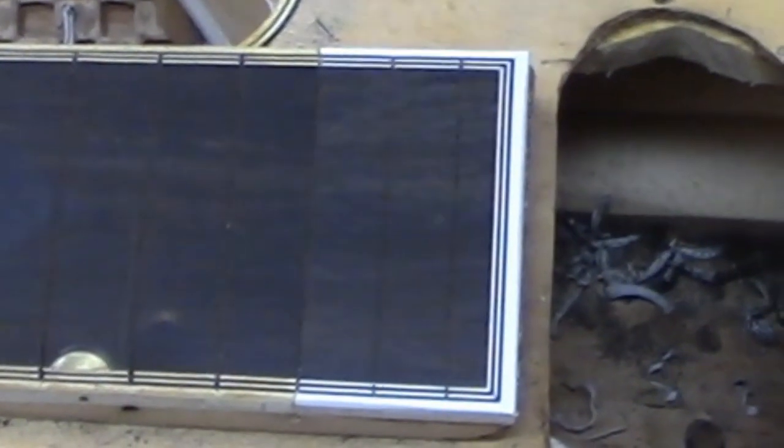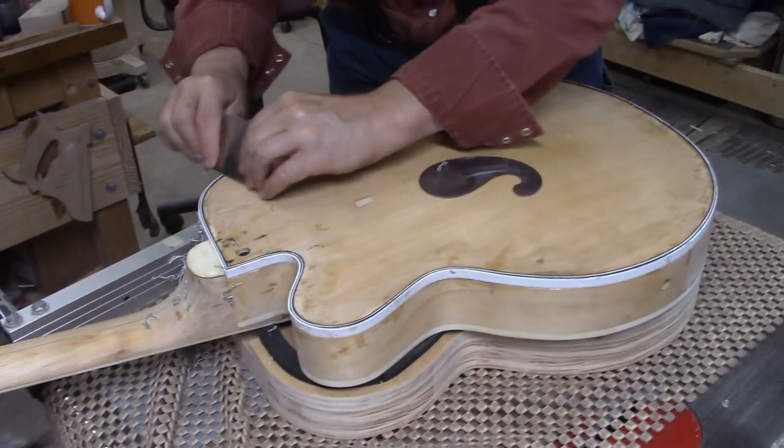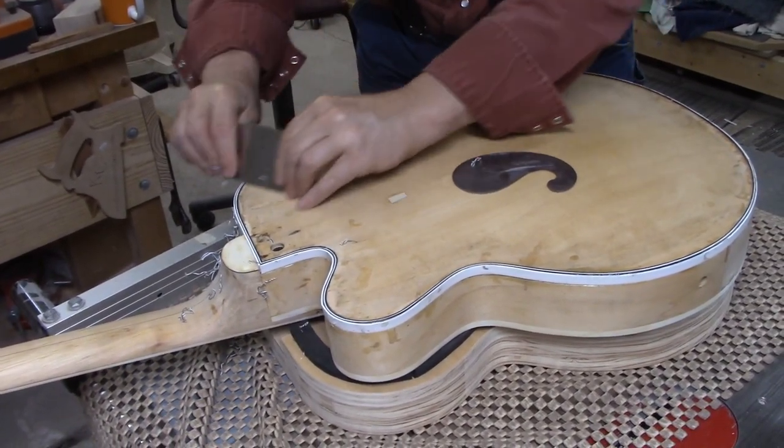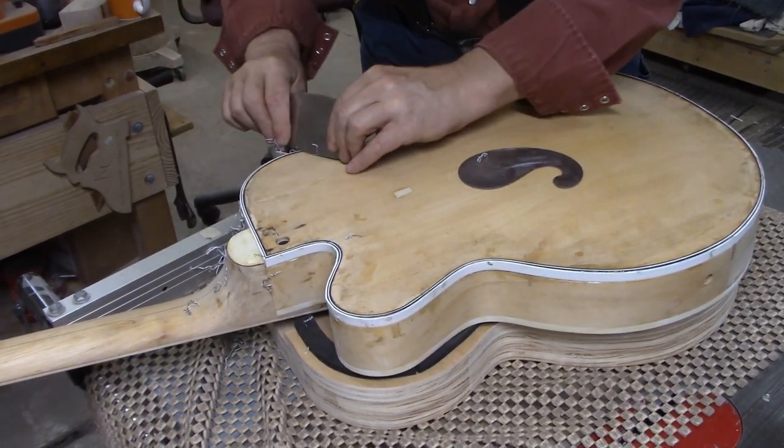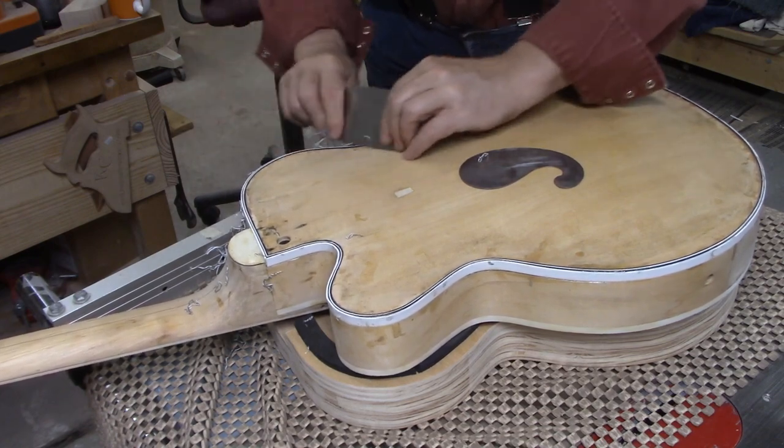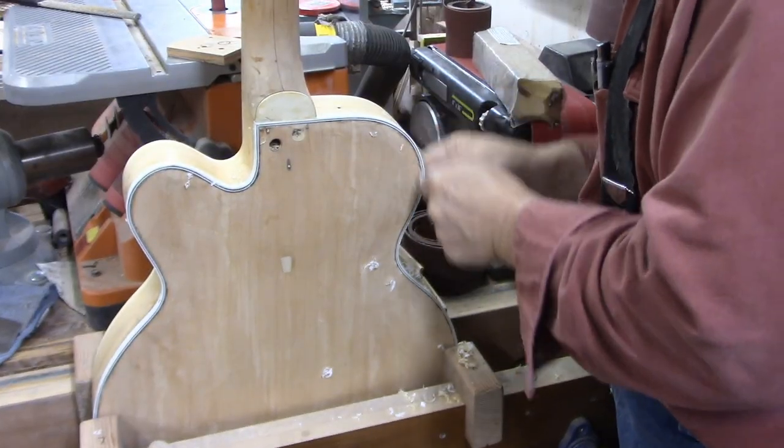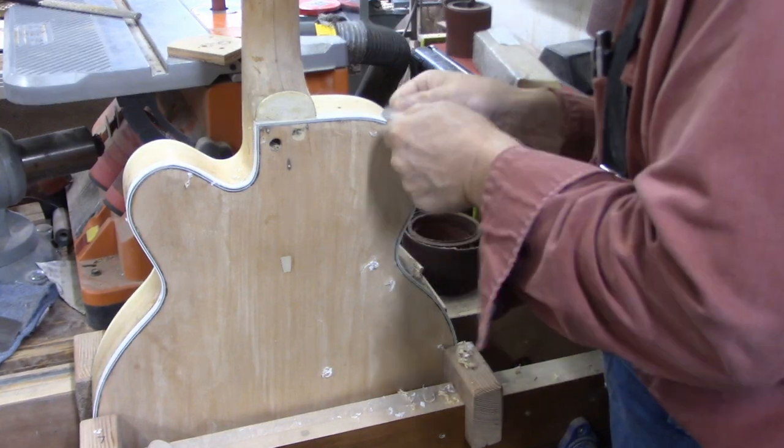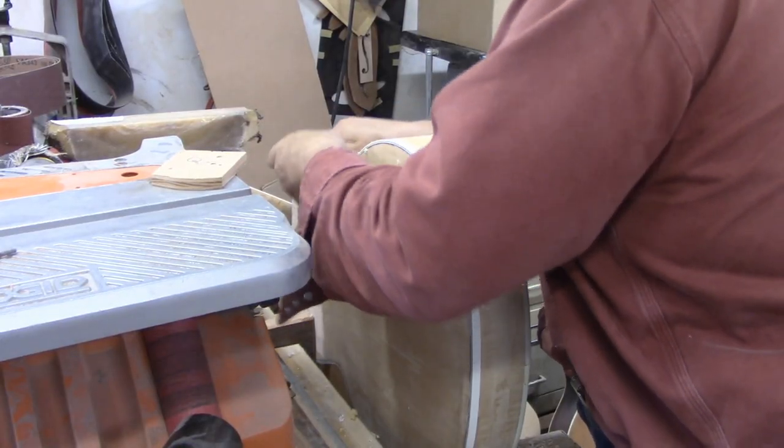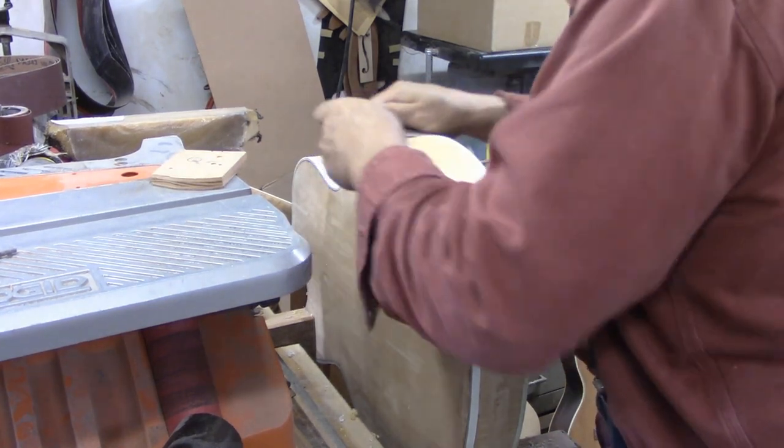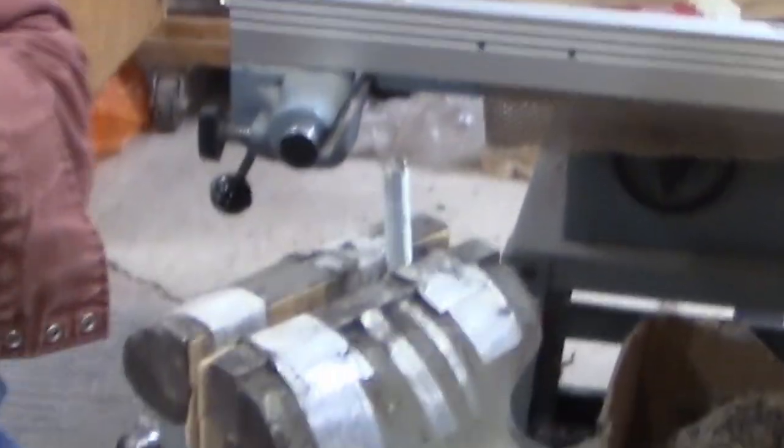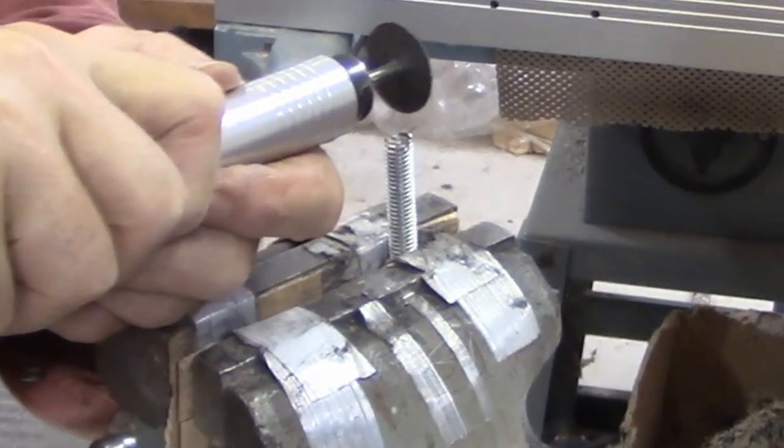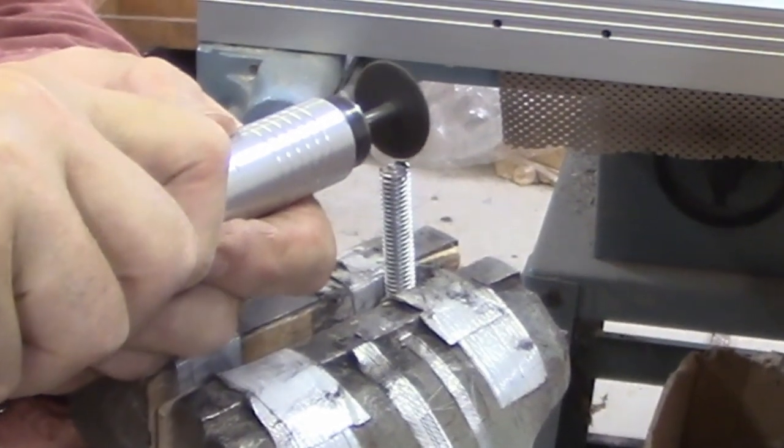Okay that's it. Endless binding scraping, now we have to make a truss rod wrench to fit that unusual design so here goes.